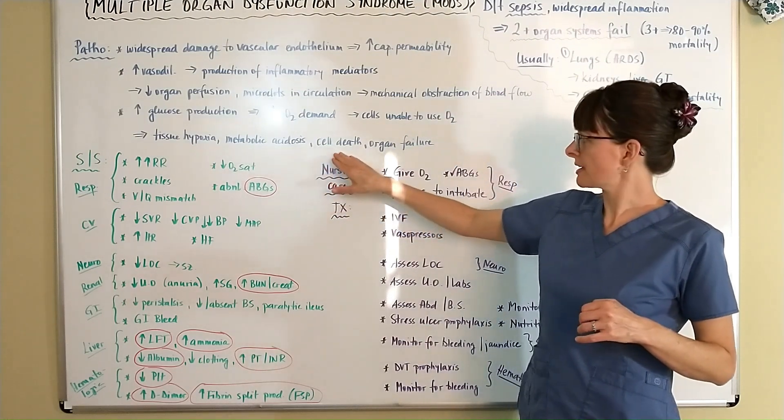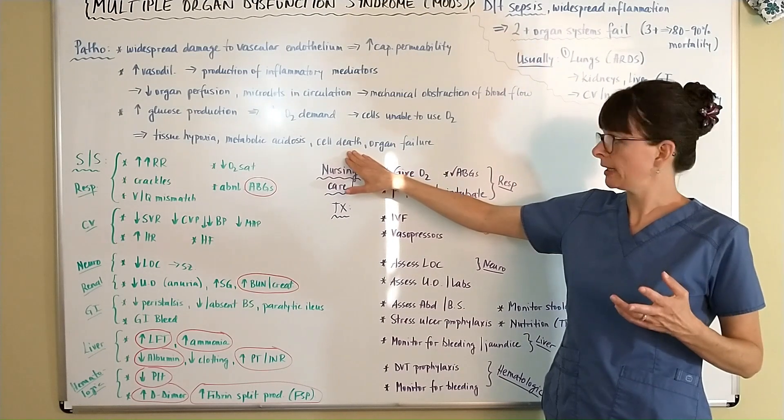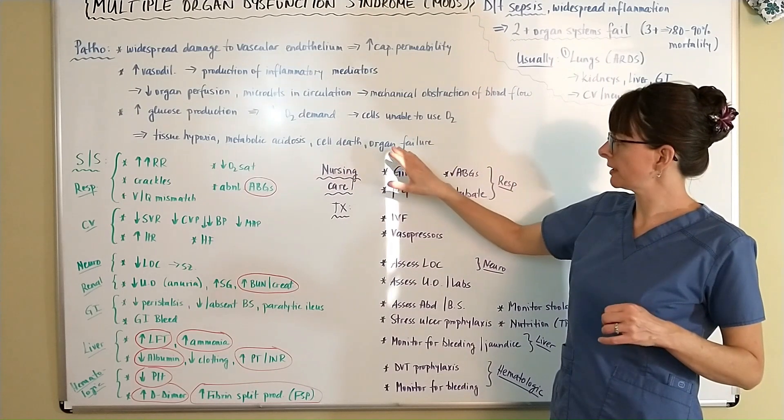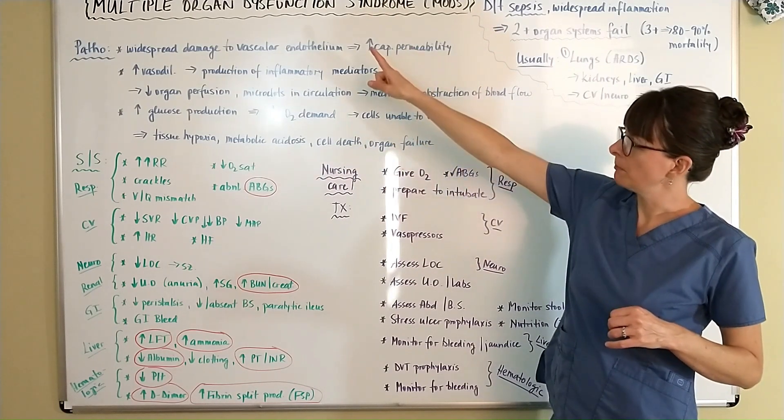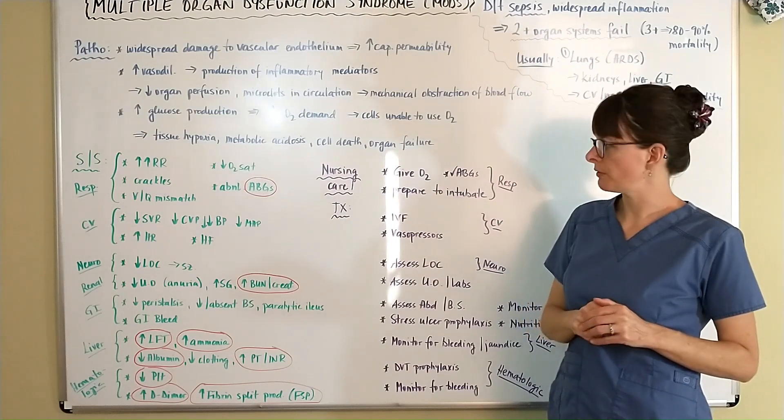then what happens as the tissues and organs don't get enough O2, cell death occurs and then if one or two or three more organs are affected, it leads to organ failure, maybe leading to multiple organ dysfunction if more than two are affected.